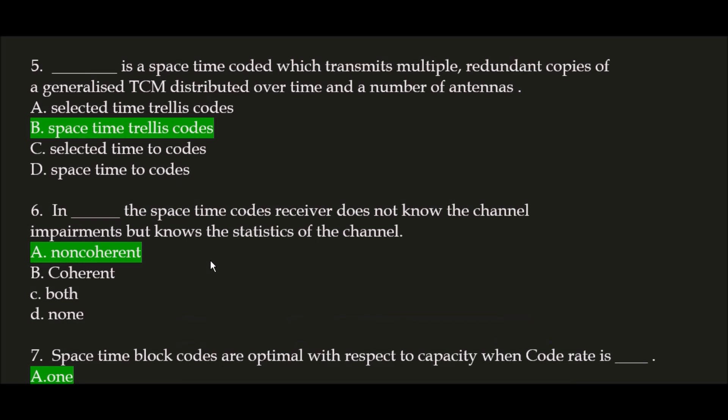Next question: blank space is a Space Time Code which transmits multiple redundant copies of a generalized TCM distributed over time and a number of antennas.